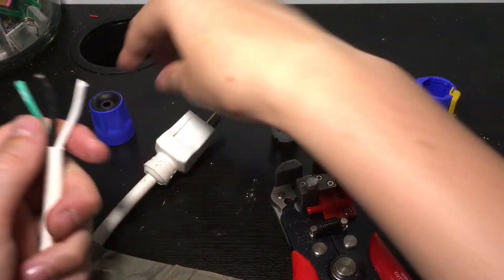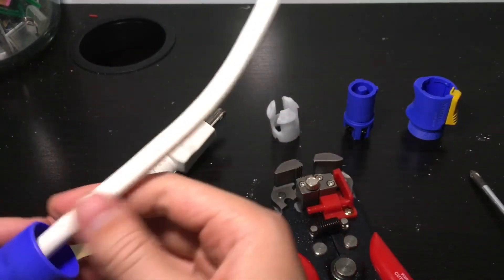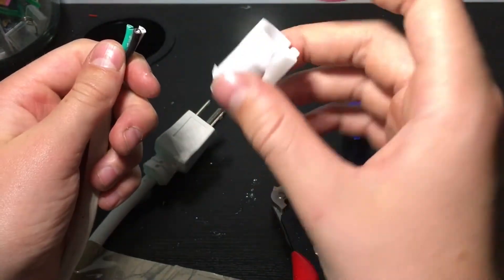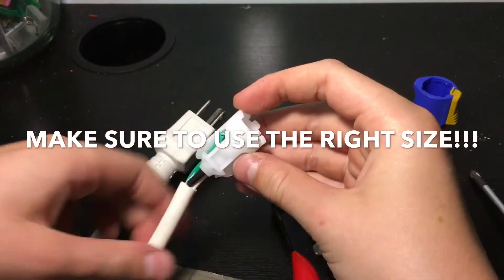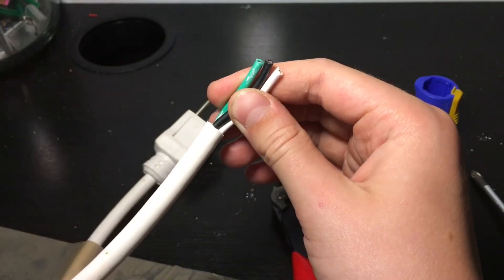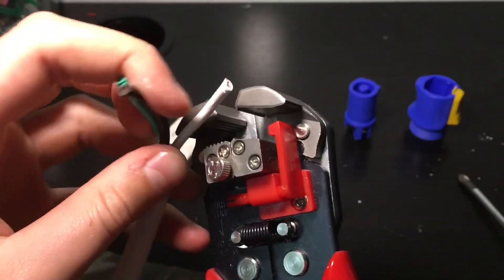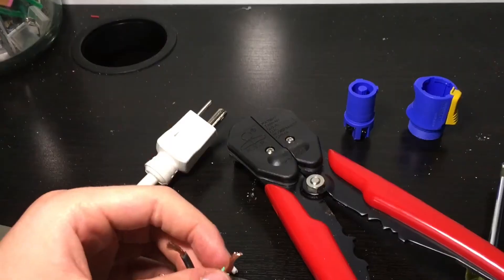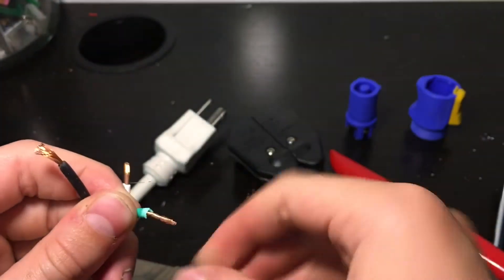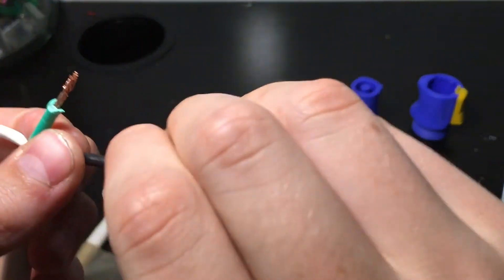First you have to put on the back part of the PowerCon jack and slide it as far down as you need just to keep it out of the way. Then you're going to put what is called the strain relief on with the pointy ends down and the somewhat flat end up. Then you're going to strip your three wires. Now you want to twist your wires so that they will go into the jack more easily. Do this with all three.